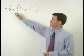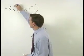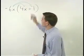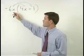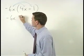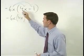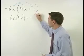Now we can distribute this negative 6x through each of the terms inside the parenthesis. That gives us negative 6x times 4x plus negative 6x times negative 1.